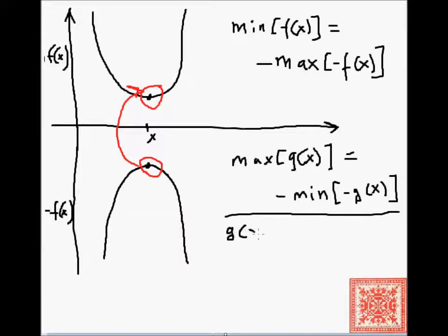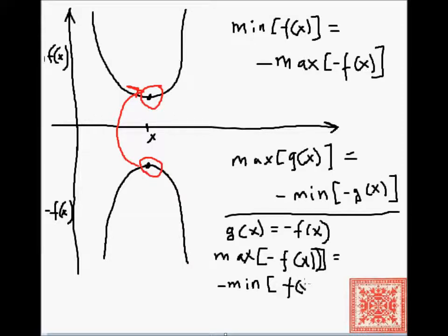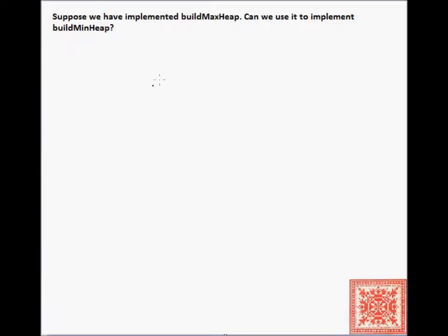To continue with our parabolic example, let's say that g of x is minus f of x. If we want to find the maximum of g of x, which is the maximum of minus f of x, then this is the negative of the minimum of the minus g of x, or simply f of x. Find the minimum of f of x, and then negate, take the negative of that.